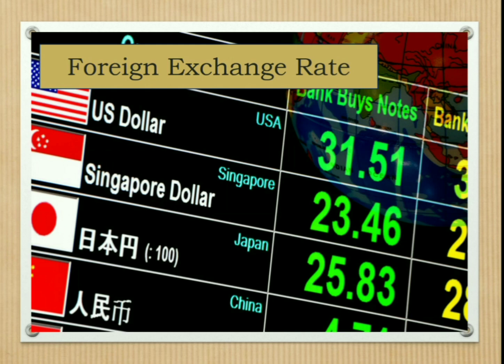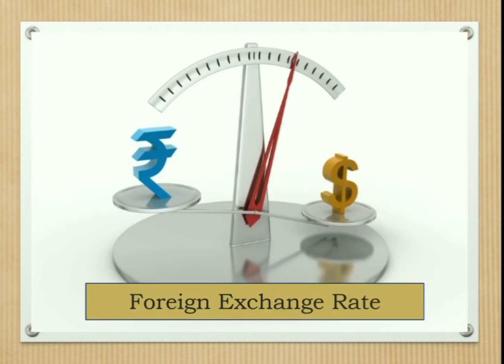Another feature is foreign exchange rate. Internal trade is based on the price of goods and services, but international trade is based on the price of currencies, that is, the exchange rate. The exchange rate is the number of units of domestic currency required to purchase one unit of foreign currency. For example, one US dollar is equal to 70.72 Indian rupees. The exchange rate shows the price of one currency in terms of another, so foreign exchange rate plays an important part in foreign trade.